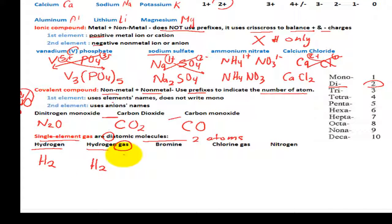We have to assume that this exists as a gas form because it is extremely unstable by itself as a single atom. Then we have bromine would be Br2. We have chlorine gas. The same thing as chlorine would be Cl2.